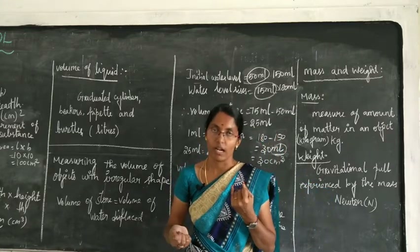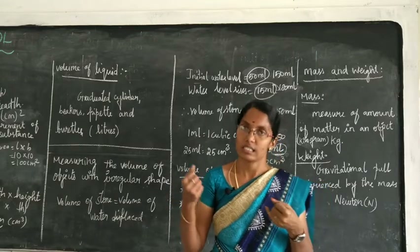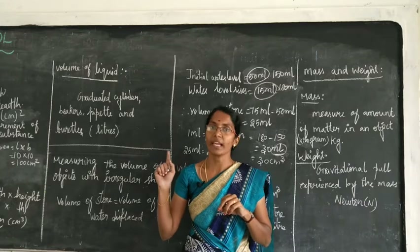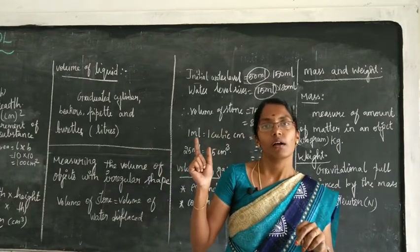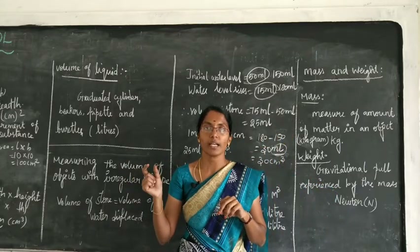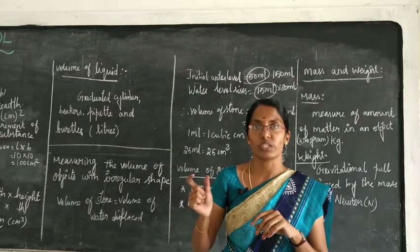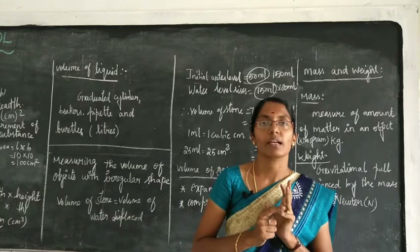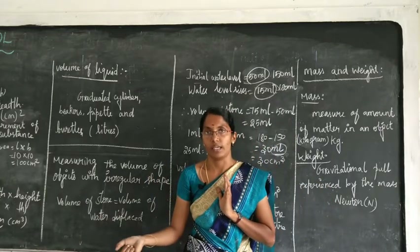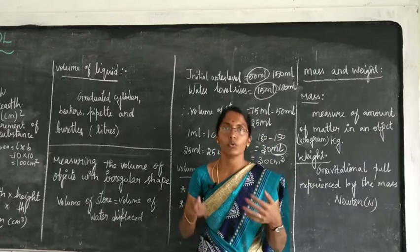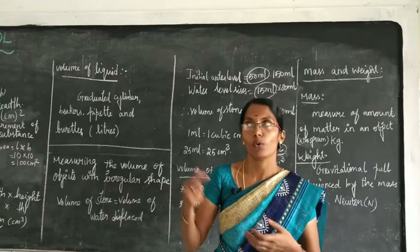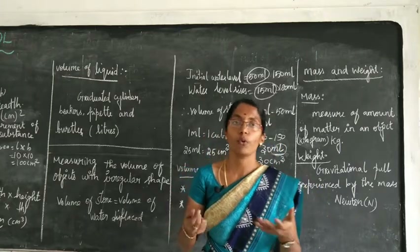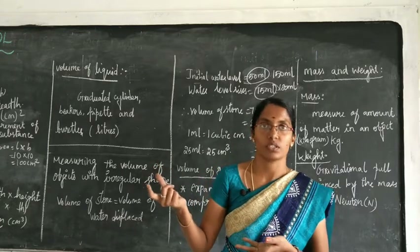The SI unit of time is seconds. 60 seconds make 1 minute, and 60 minutes make 1 hour. So 60 × 60 = 3600 seconds make one hour. If you don't know how to read the time, you can learn with the help of your parents.